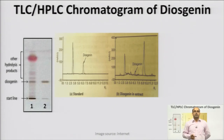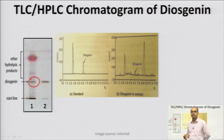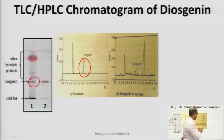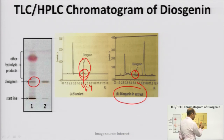In the TLC diagram, the green spot of diosgenin is observed at Rf 0.47, along with other hydrolysis products in the sample. In the HPLC chromatogram, the diosgenin standard peak and the diosgenin peak in the extract are compared — any peak at the retention time of approximately 6.4 to 6.5 minutes gives the concentration of diosgenin in the drug sample.